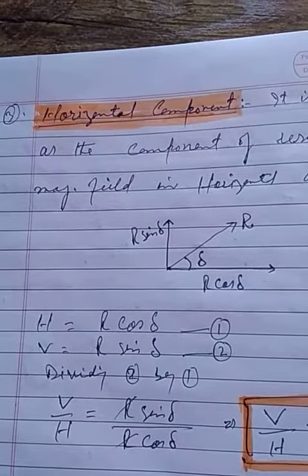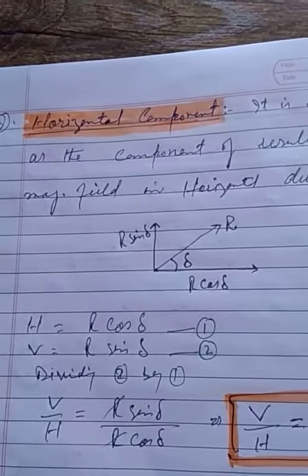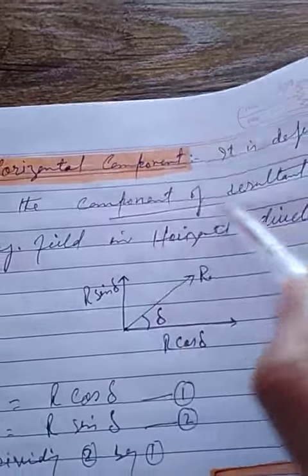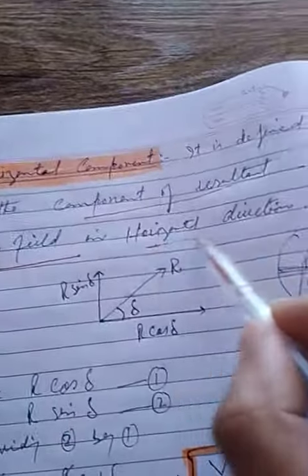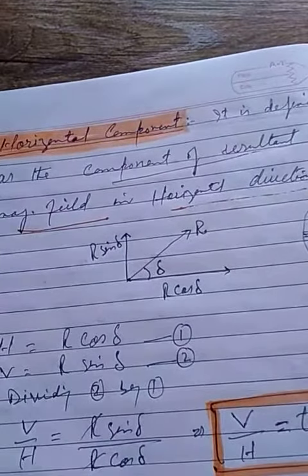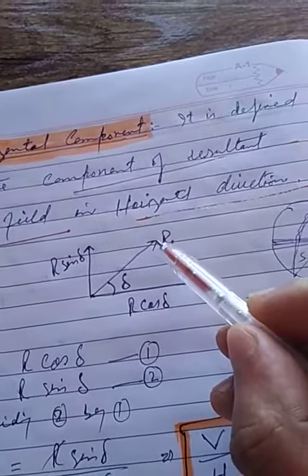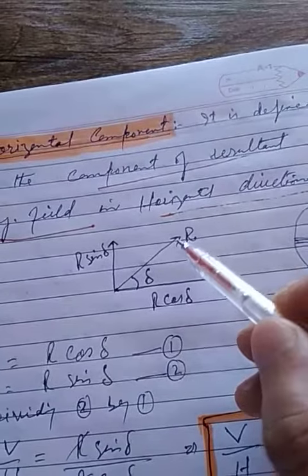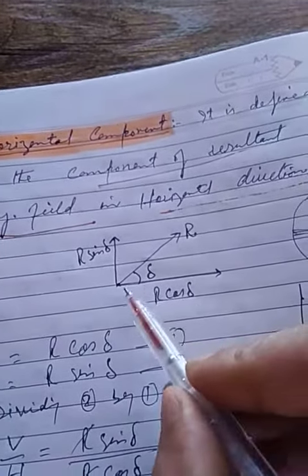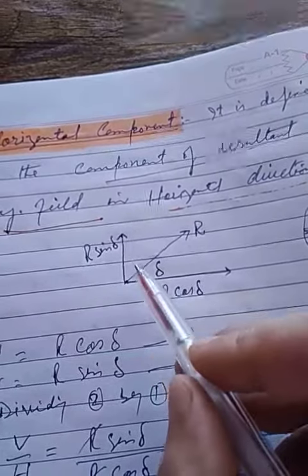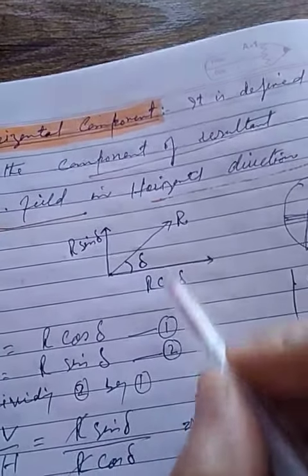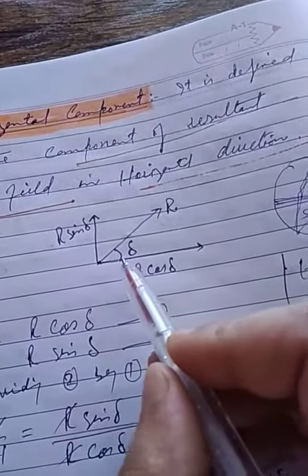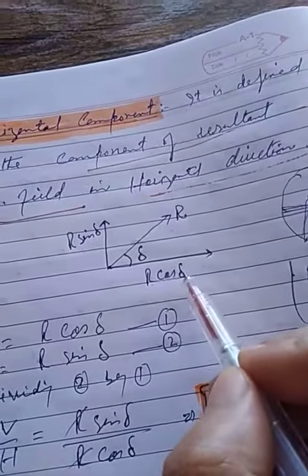Today we will discuss the horizontal component of Earth's magnetic field. It is defined as the component of the resultant magnetic field in the horizontal direction. If R is the resultant magnetic field of the Earth, we can divide it into two rectangular components: one in the horizontal direction and another in the vertical direction. The horizontal component is R cos δ, since it is inclined at angle δ.